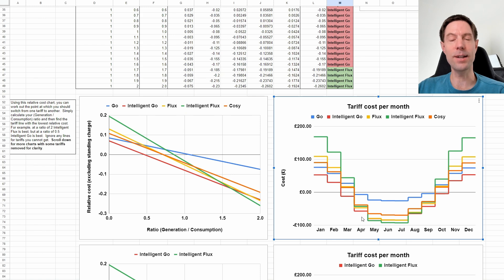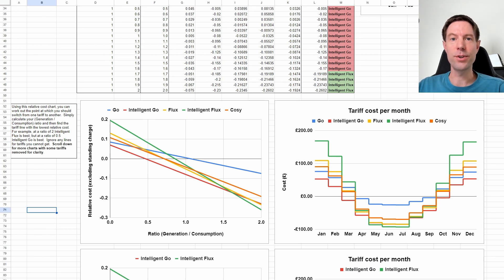I should also mention quickly that not all of these tariffs are available for everybody to use. So for example, if you don't have a compatible EV or charger then you won't be able to get the Intelligent Go tariff. And likewise if you don't have a GiveEnergy or Tesla battery system you won't be able to get the Intelligent Flux tariff. So if you can't get a particular tariff, simply ignore that particular line on this chart and just concentrate on the other tariffs that are available to you. Feel free to take a copy of the spreadsheet yourself, put your own consumption and generation values in there and see what the rule of thumb suggests for you. Now I'm willing to bet it'll be Intelligent Go, but yeah, I'll be interested to hear.